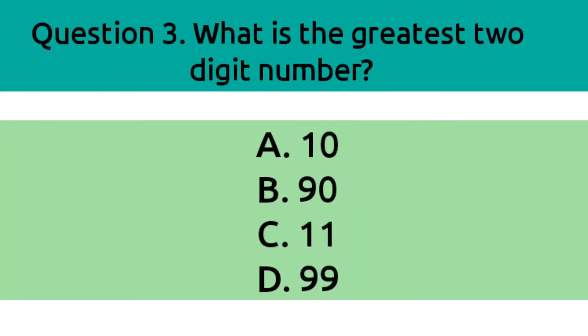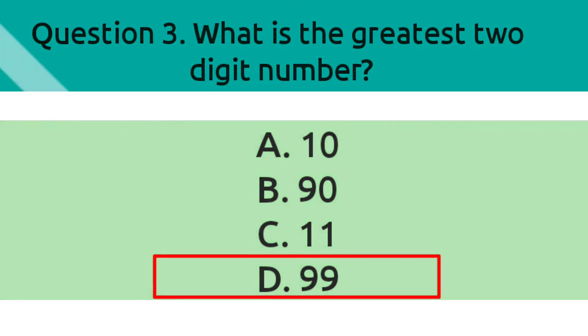Question 3. What is the greatest two digit number? Option A, 10. Option B, 90. Option C, 11. Option D, 99. And the correct answer is Option D, 99.